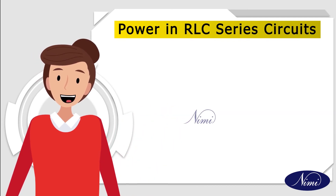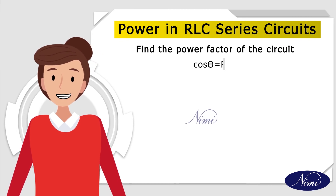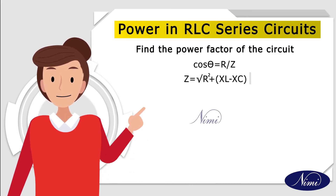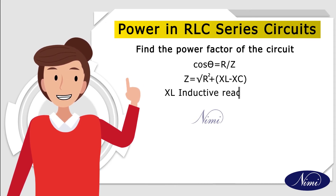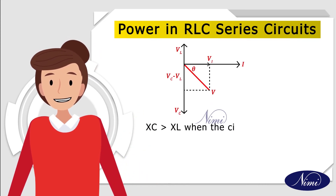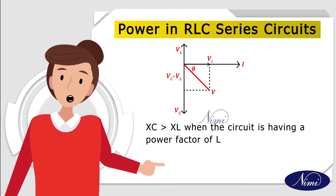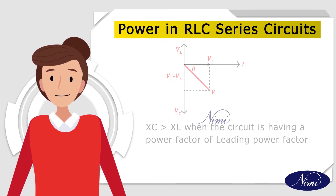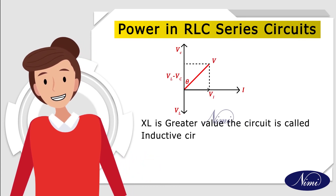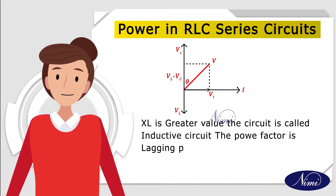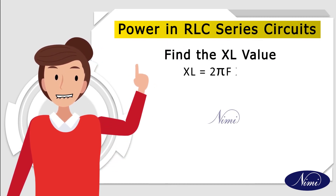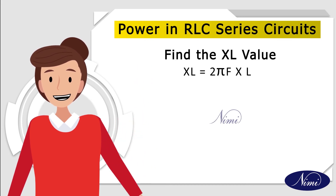Now we find the power factor of the circuit. Cos theta equals R divided by Z, where Z equals the square root of R² plus (X_L minus X_C)². X_L is the inductive reactance and X_C is the capacitive reactance. If X_C is greater than X_L, the circuit has a leading power factor. If X_L is greater, the circuit is inductive and has a lagging power factor. X_L equals 2·pi·F·L, and X_C equals 1 divided by 2·pi·F·C.